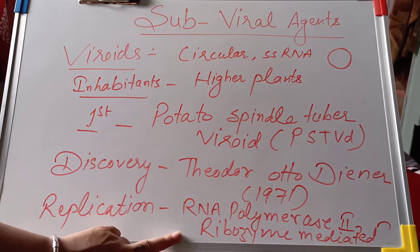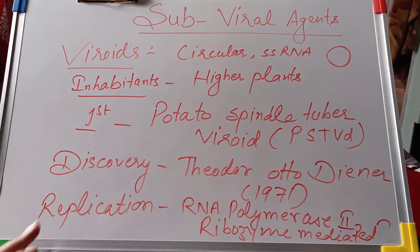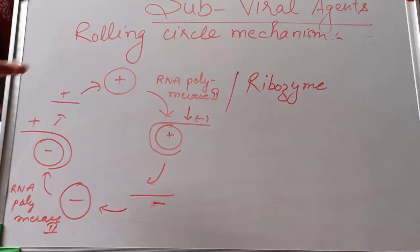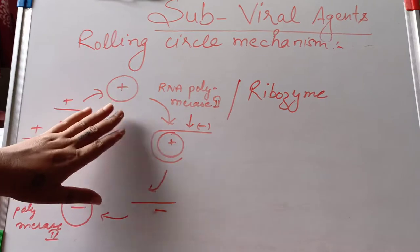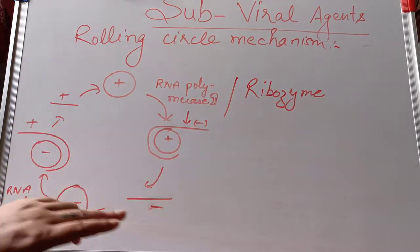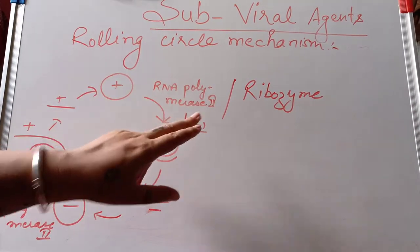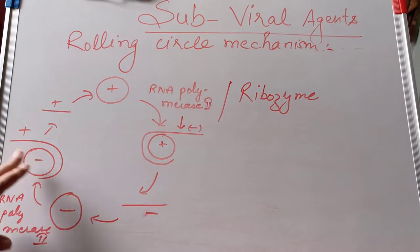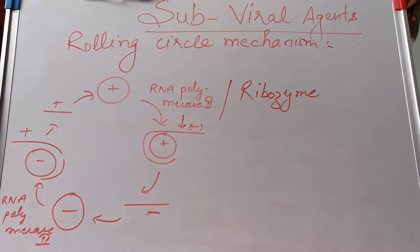Regarding replication, viroids mostly replicate by a rolling circle mechanism, using host RNA polymerase II and ribozymes. Starting with the circular strand of the viroid, RNA polymerase II or ribozyme synthesizes a negative strand against it, which gets cleaved. This negative strand then gets circularized, a complementary positive strand is synthesized, which also gets cleaved and circularized. This is the rolling circle replication mechanism of viroids.